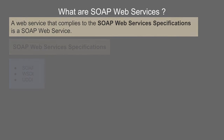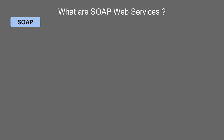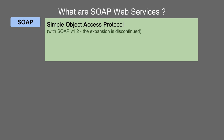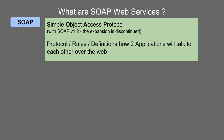So let us see what SOAP means. SOAP is a protocol and it stands for Simple Object Access Protocol. This is the expansion which was used until SOAP version 1.1, but with SOAP 1.2 this expansion has been discontinued, but we are still stuck with the acronym.